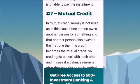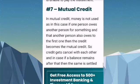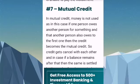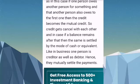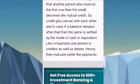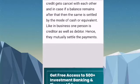Number seven is mutual credit. In mutual credit, money is not used in the usual sense. If one person owes another person for something, and that other person also owes the first one, then the credit becomes mutual credit — the credits cancel each other out. If a balance remains after netting, it is settled by cash or equivalent. For example, in business one person may be both a creditor and a debtor, so they mutually settle the payments.